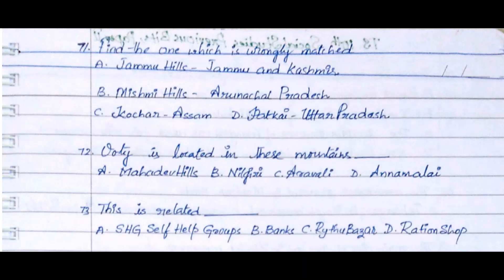Question 72: Ooty is located in these mountains. Option A. Mahadev Hills, Option B. Nilgiri, Option C. Aravali, Option D. Annamalai. The answer is Option B. Nilgiri.